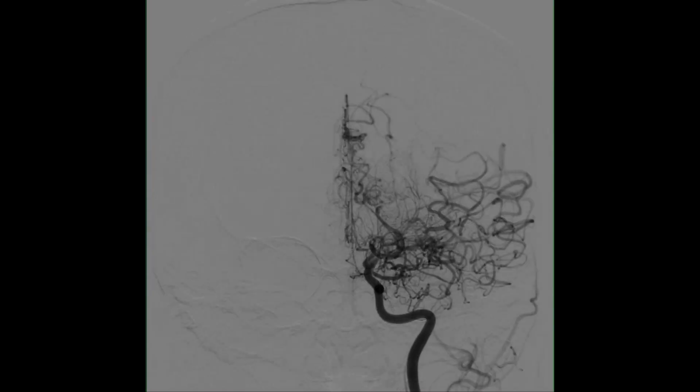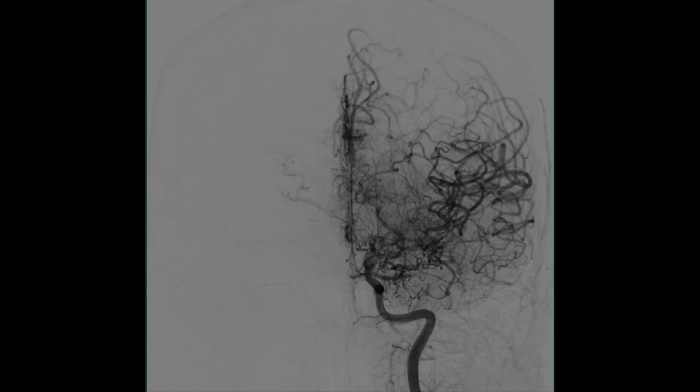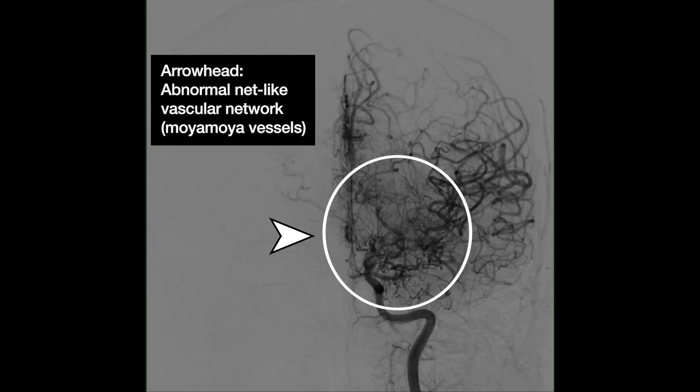Imaging of the left hemisphere of the brain shows less severe similar abnormalities, with narrowing of the terminal portion of the left internal carotid artery and an abnormal net-like vascular network with a similar smoke-puff appearance.